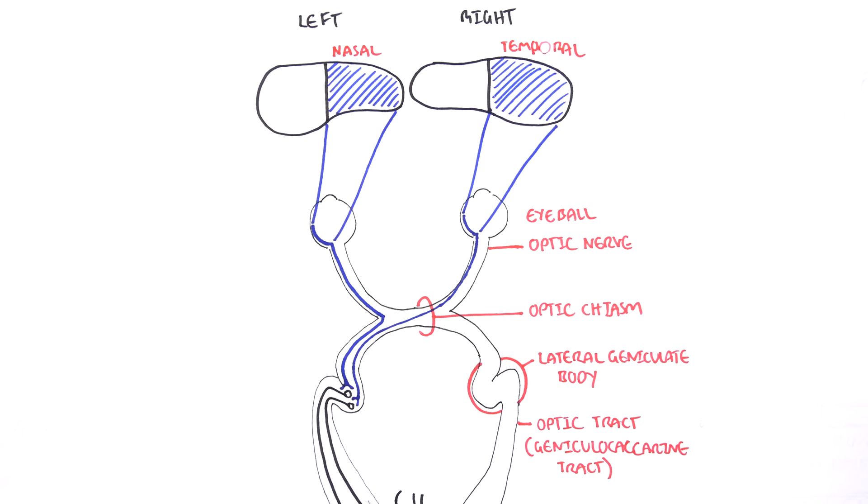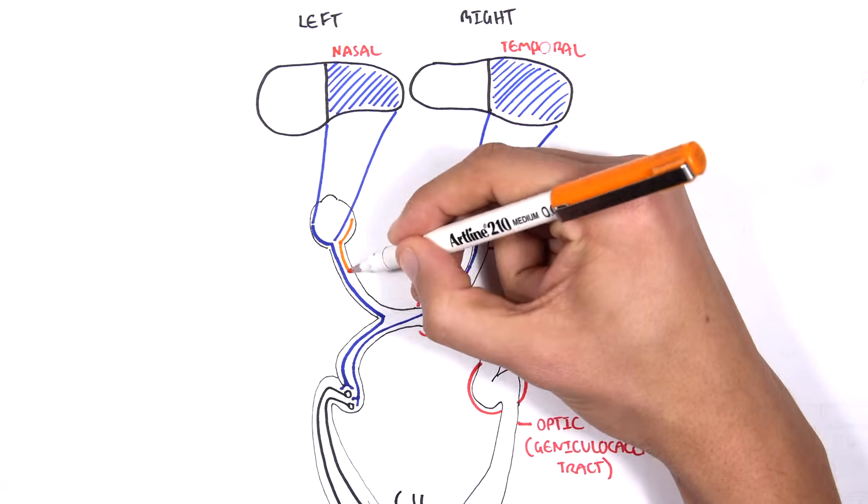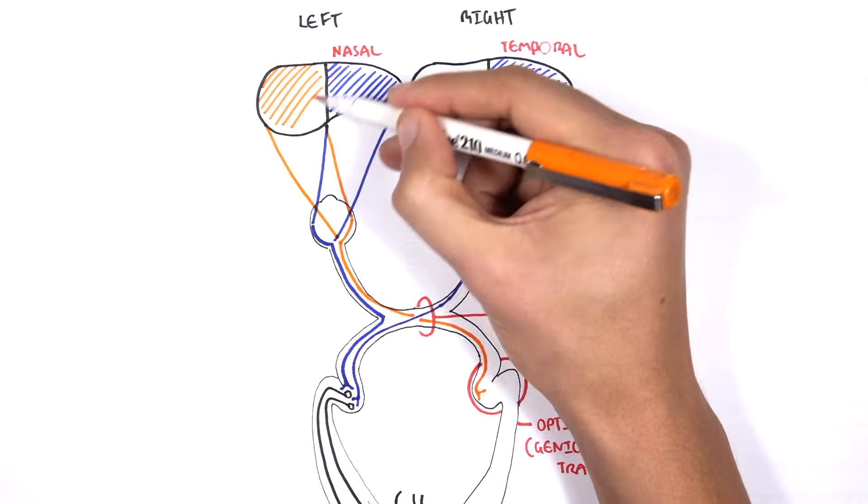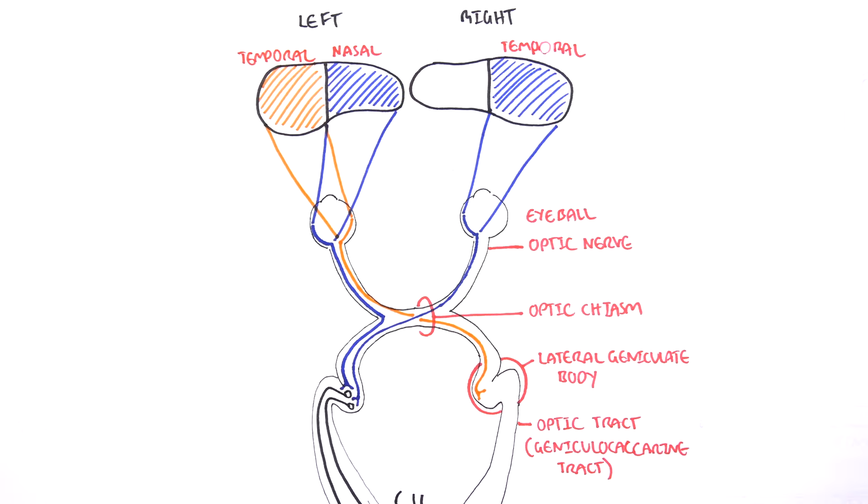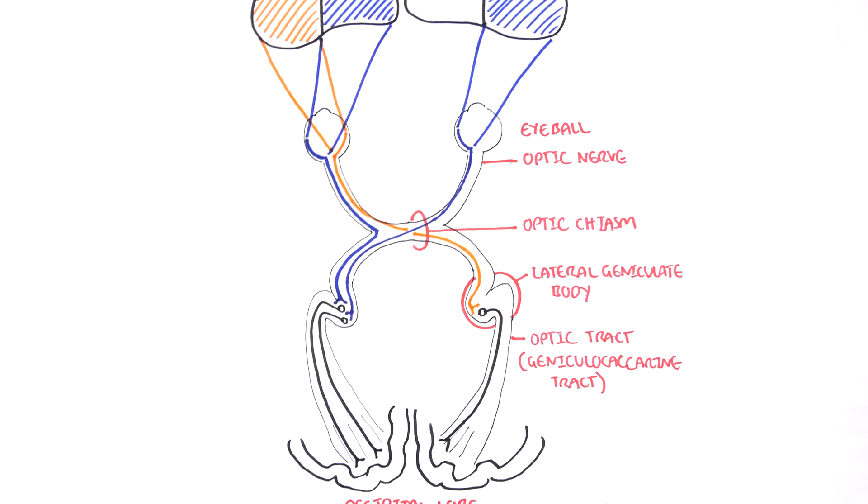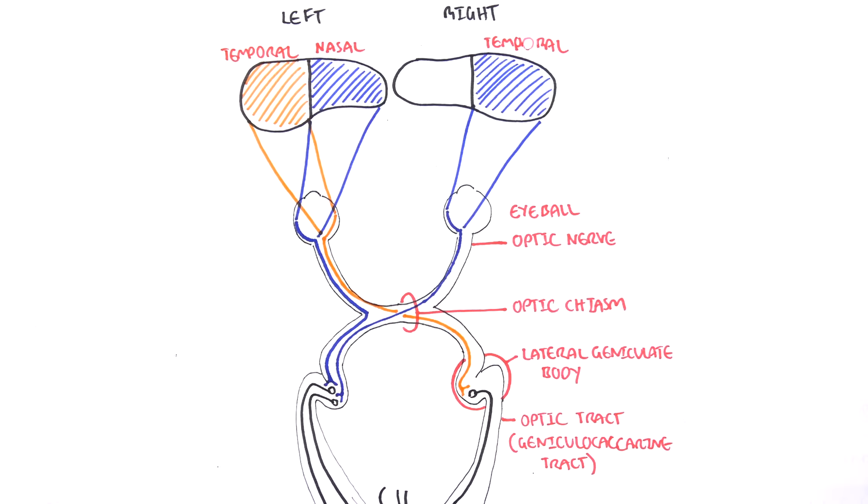This orange optic nerve on the left eyeball here will capture images from the left temporal visual field and cross over at the optic chiasm and synapse at the right lateral geniculate body where it will relay the information to the optic tract which then will bring it to the occipital lobe.